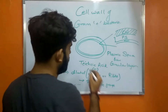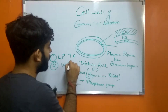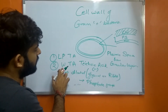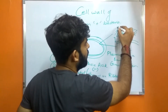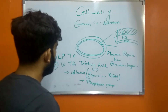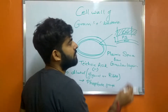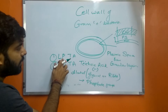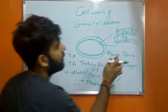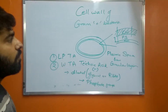Teichoic acid consists of two classes: the first is lipoteichoic acid and the second is wall teichoic acid. The difference between them is that lipoteichoic acid extends from outside the cell wall and is linked to the plasma membrane, while wall teichoic acid is present only till the periplasmic space and only spans the peptidoglycan layer.